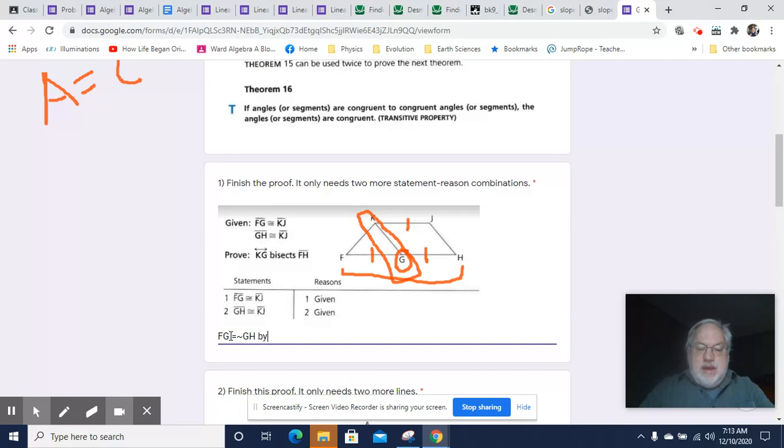What we're saying is FG is congruent to KJ, which is congruent to GH. So since KJ is congruent to FG and it's congruent to GH, then we can then say that FG is congruent to GH because they're both congruent to the same segment. They're both congruent to the same thing.